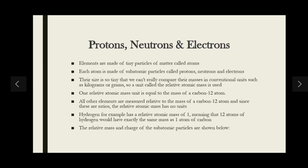Since relative atomic mass values are ratios, they have no units. Hydrogen, for example, has a relative atomic mass of one, meaning that 12 atoms of hydrogen have exactly the same mass as one atom of carbon-12. We are not comparing masses in conventional units — we are measuring them relative to the carbon-12 atom, where one relative atomic mass unit equals the mass of a carbon-12 atom.